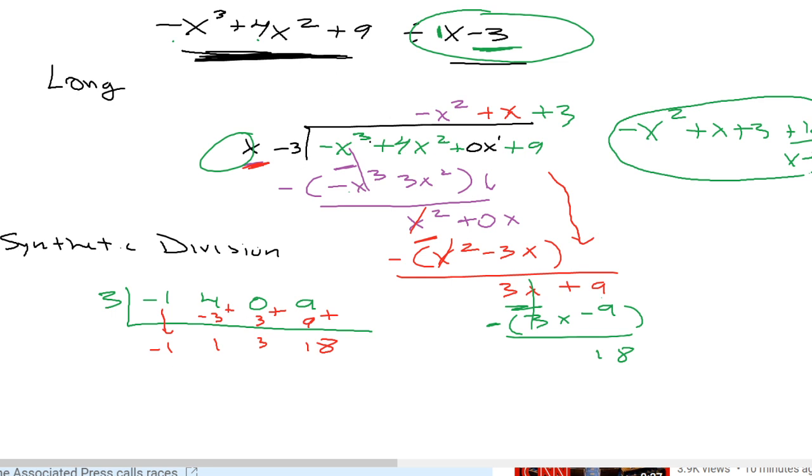So then your answer is going to be negative 1x squared, and it's always going to be 1 less than your original polynomial. So negative x squared plus x plus 3 plus the remainder, 18 over x minus 3.